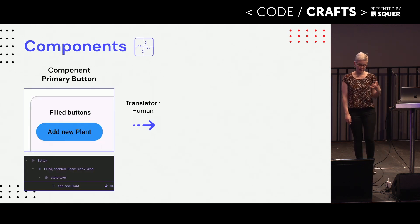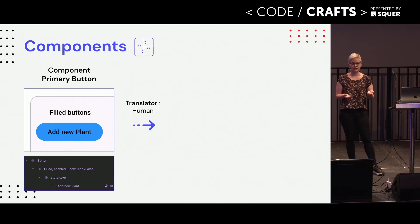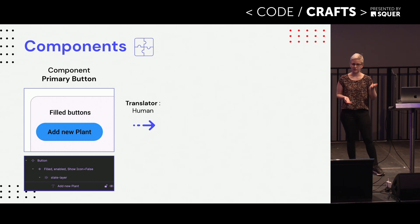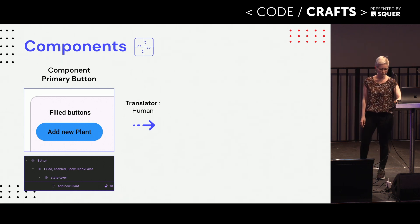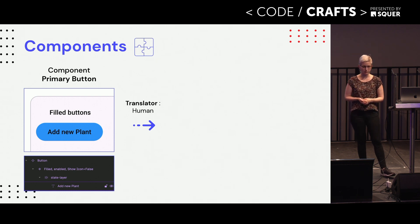For the components, on the left side you can see how that would look like in Figma, for example. You also build your components in there, so that's more on the designer side. But they are going to use the same tokens as I am going to use in my code base, to ensure that the designs really look the same like on design and on my applications. In this case, the translator is often a human, a developer. Of course there are tools which can automate this process, but in the teams I worked with, this was done by engineers.